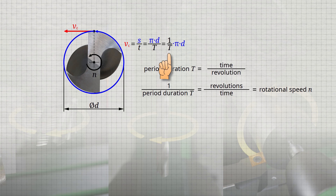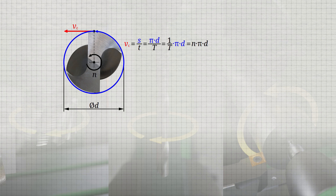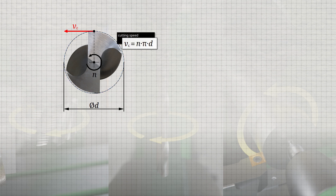If we replace the reciprocal of the period duration in the derived formula with the spindle speed, the relationship between cutting speed, spindle speed, and diameter results. In practice, cutting speeds are usually given in meters per minute.